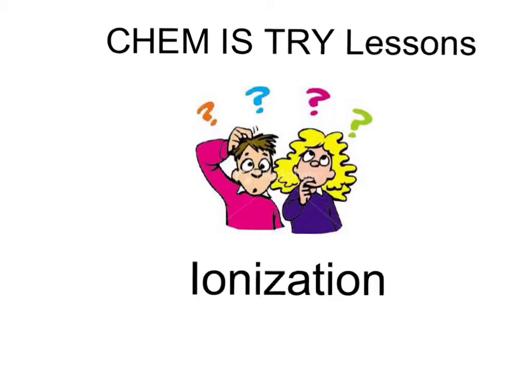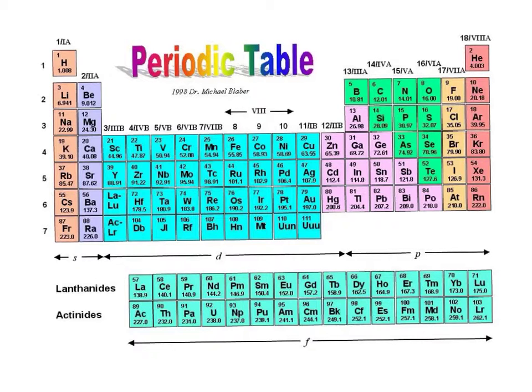All right, in this lesson we're going to talk about ionization and what is an ion. As we can see here by the periodic table, every element up here can become an ion, some easier than others.